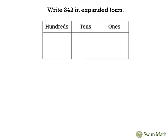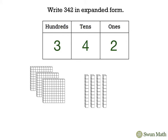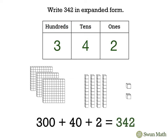We'll use our place value chart. We have three hundreds, four tens, and two ones. That gives us 300, 40, and 2. In expanded form we would write this as 300 plus 40 plus 2.